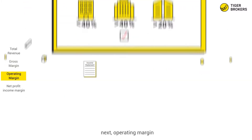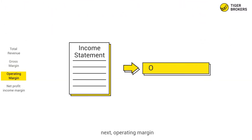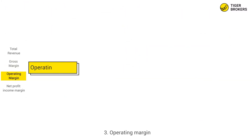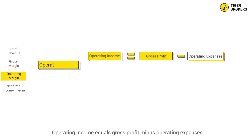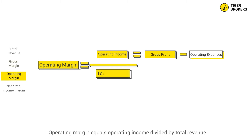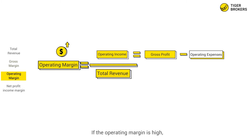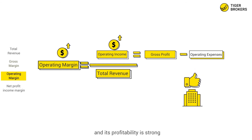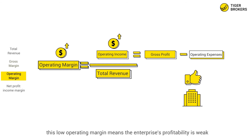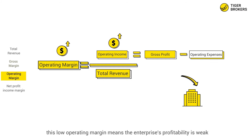Operating income equals gross profit minus operating expenses. Operating margin equals operating income divided by total revenue. If the operating margin is high, the enterprise's main business provides high profits and its profitability is strong. Conversely, a low operating margin means the enterprise's profitability is weak.